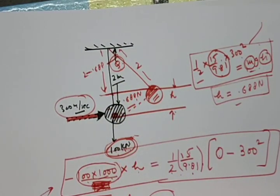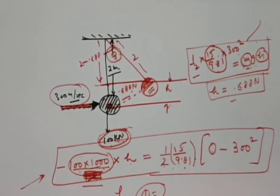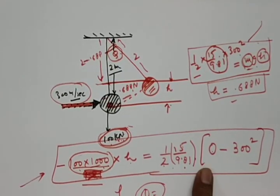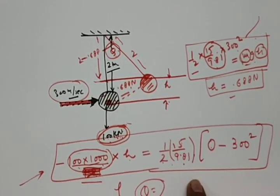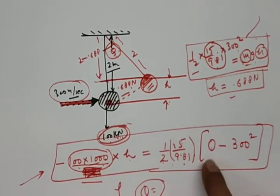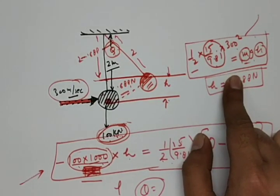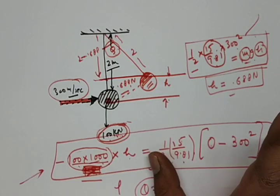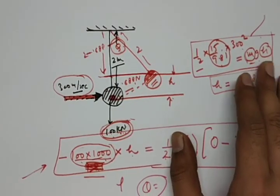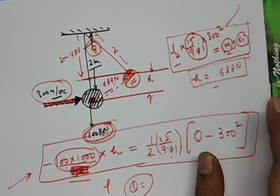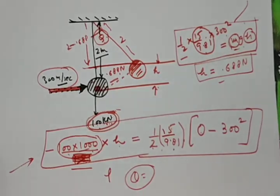From here we calculate the value of theta and find the angle. In this lecture, we discussed unique questions using the impulse-momentum principle. In the next lecture, we will study oblique collision, looking at how balls collide at angles and how to deal with those questions. Thank you.